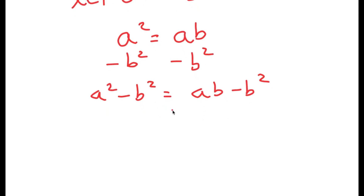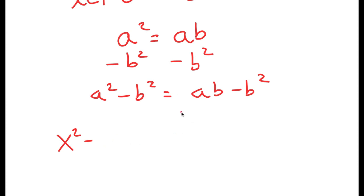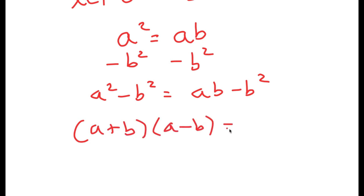Here I'm going to use a property for a squared minus b squared. If I have something in the form x squared minus y squared, this is equal to x plus y times x minus y — this is a property of algebra. So I apply this to get a plus b times a minus b, and for a times b minus b squared, because both terms have b in them, I'm going to factor out b.